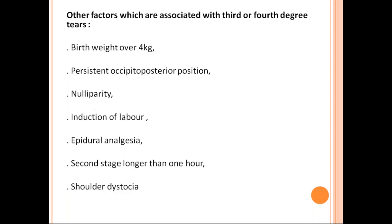Other factors associated with third or fourth degree perineal tears include birth weight over four kilograms (macrosomia), persistent occipito-posterior position — where the angles and diameters are relatively greater, leading to perineal injuries — nulliparity, and induction of labour. In induction of labour, the perineum is not adjusted and ready for delivery, unlike natural onset of labour. In preterm delivery or induced labour, there will be more perineal tears. Epidural analgesia may also lead to forceps application, and a second stage longer than one hour or shoulder dystocia are additional factors.